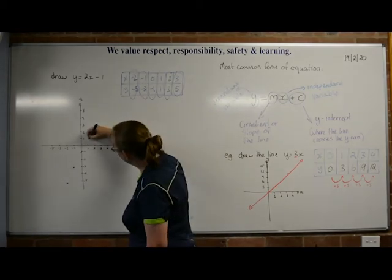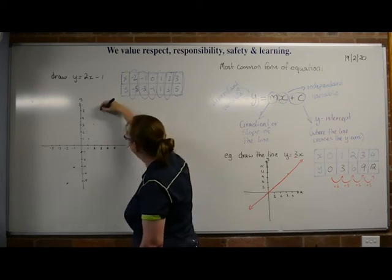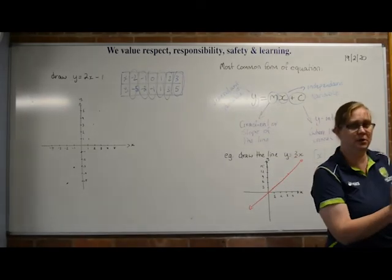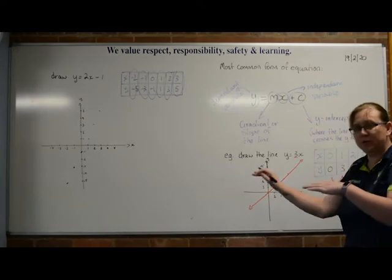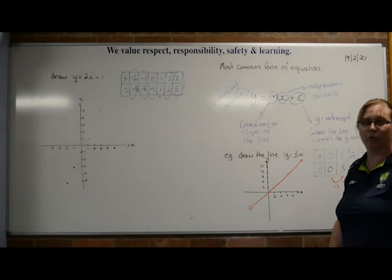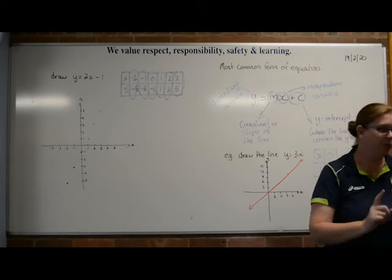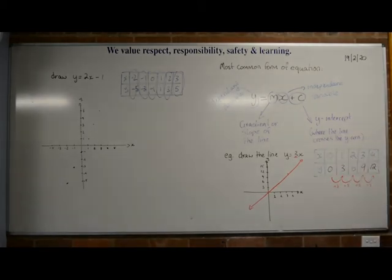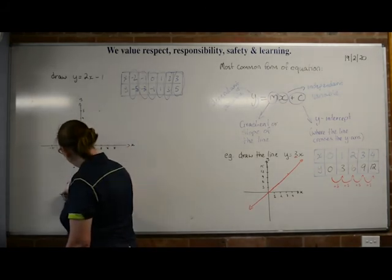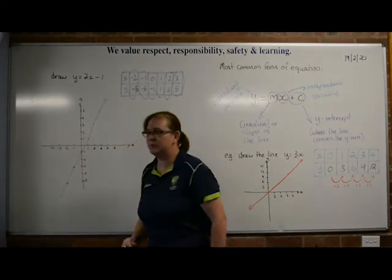Then 1, 1. Then 2, 3. And 3, 5. Notice how I'm doing my x number first, then my y number. So I go across whichever way I need to go, and then I go either up or down depending on what the y number is. And then hopefully, using a ruler, you'll get a nice straight line. Hopefully yours is a little bit straighter than mine.